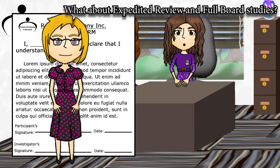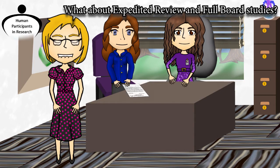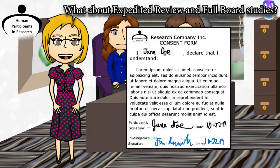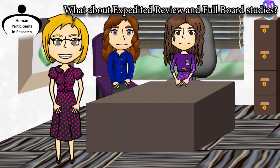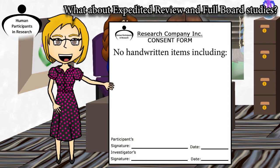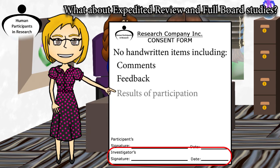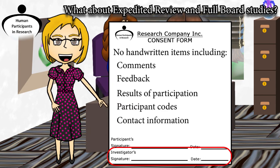What about expedited review and full board studies? Both the investigator and the participant should sign and date the consent form. Participants receive a signed copy; investigators keep the original. The most recently approved version containing the IRB approval stamp must be used. Investigators should not handwrite anything other than their signatures on the forms, including comments, feedback, results of participation, participant codes, and contact information.